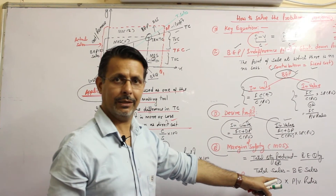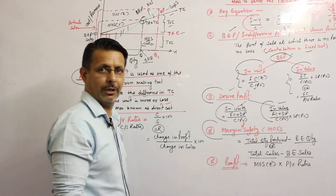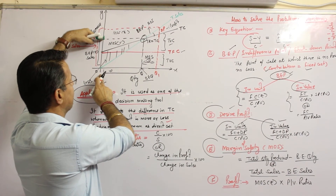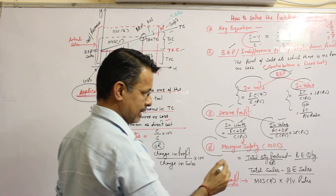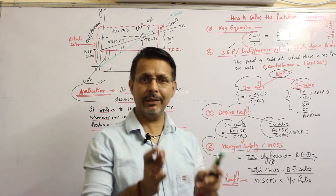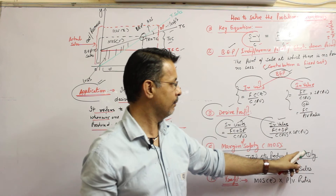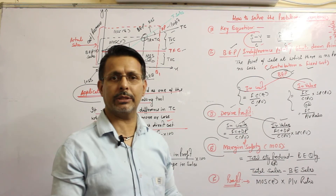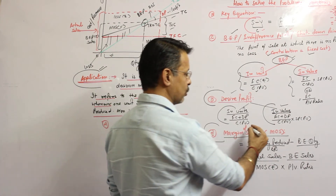If you need the margin of safety in rupees, then it is total sales minus break-even sales. So the two formulas are: for units, actual quantity produced minus break-even quantity; and for rupees, actual sales minus break-even sales. The result in both cases is the margin of safety.